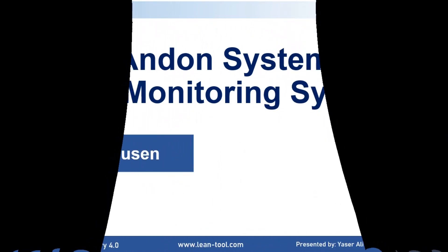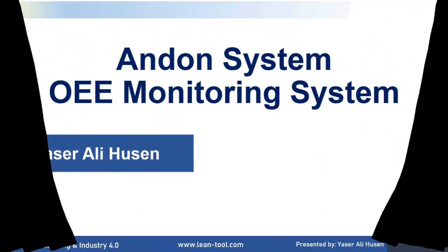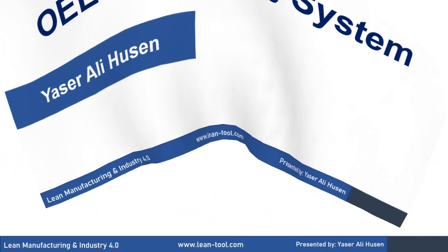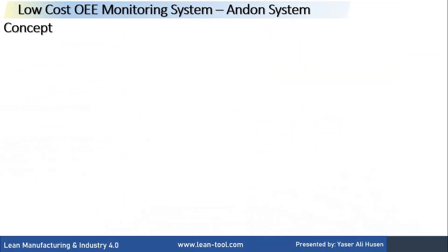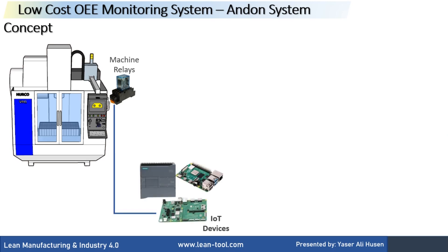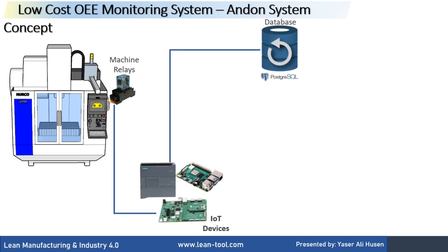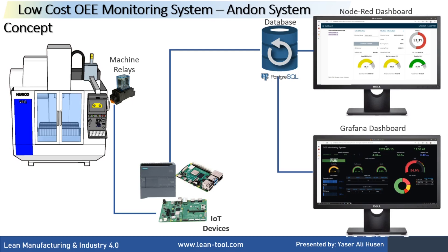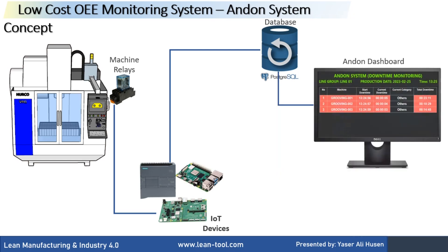Welcome back to my channel. In this video I will show you the Andon system, or downtime monitoring, in an OEE monitoring system. This is the concept: on the machine we put some relays to get machine status, they are connected to IoT devices, and the IoT devices will send data to a PostgreSQL database. For the dashboard I use Node-RED dashboard and Grafana dashboard for OEE monitoring.